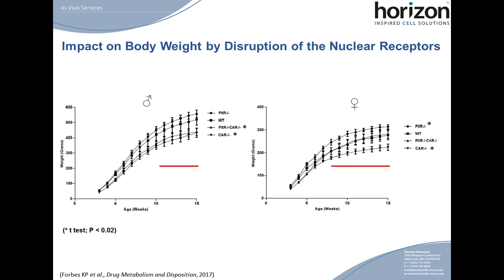Weight change was the first indication that the function of these genes was altered in the knockout animals. We also bred the CAR and PXR knockout lines to generate the double knockout. From the timeframe of 10 to 15 weeks for males and 8 to 15 weeks for female rats, disruption of PXR led to weight gain, although in male rats the increase was not statistically significant. Male double knockout rats were significantly lighter than wild-type, whereas female double knockout rats were comparable to wild-type counterparts. The overall trend suggests that these nuclear receptors regulate basal expression levels of opposing sets of genes contributing to body mass, and their effect canceled each other out in the female rats.